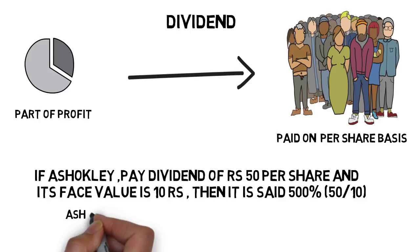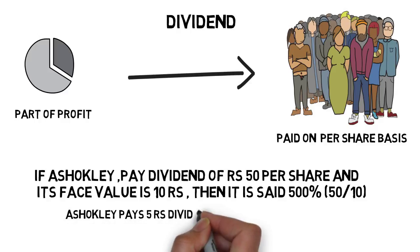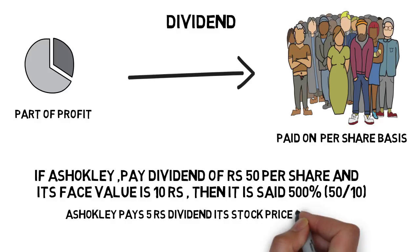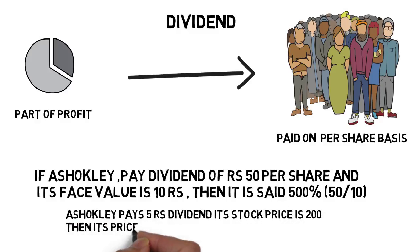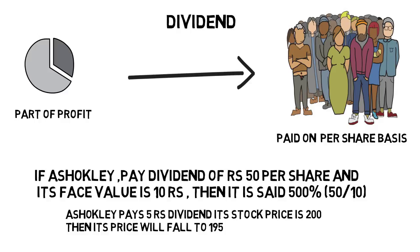What effect is created on the share price after the dividend is declared? The share price falls down. The reason behind the price drop is that whenever the company pays dividend, the amount paid out no longer belongs to the company. Hence the price falls. If Ashok Leyland pays 5 rupees dividend and the stock price is 200 rupees, after the dividend is declared the price will fall to 195 rupees.